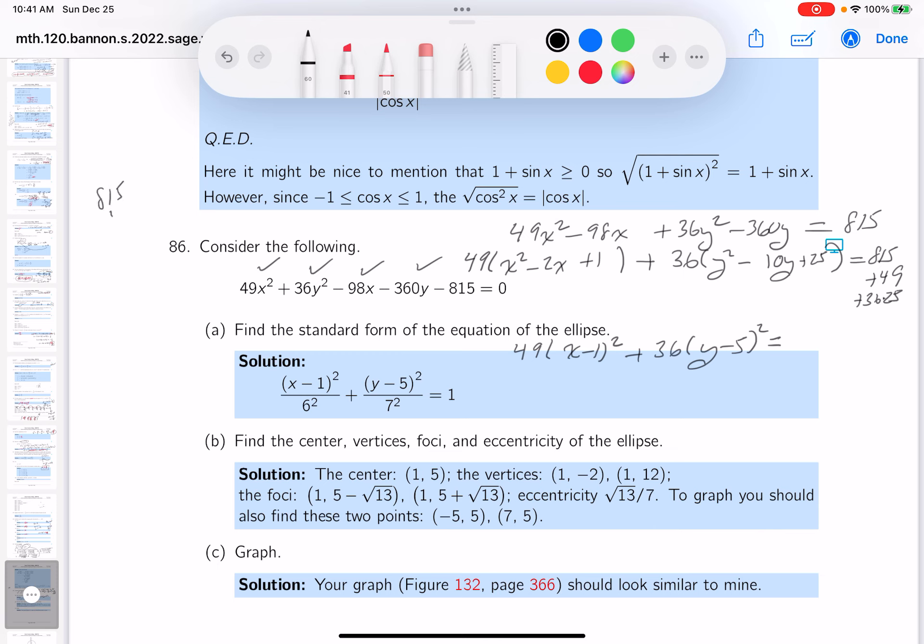So 815 minus 49, that gives you 14 times... 64. Now I've got to do 36 times 25. I'm going to write that down for you. 36 times 25. I'm going to say it's 36 times 100 over 4. 4 goes into 36 nine times. And 9 times 100 is 900.